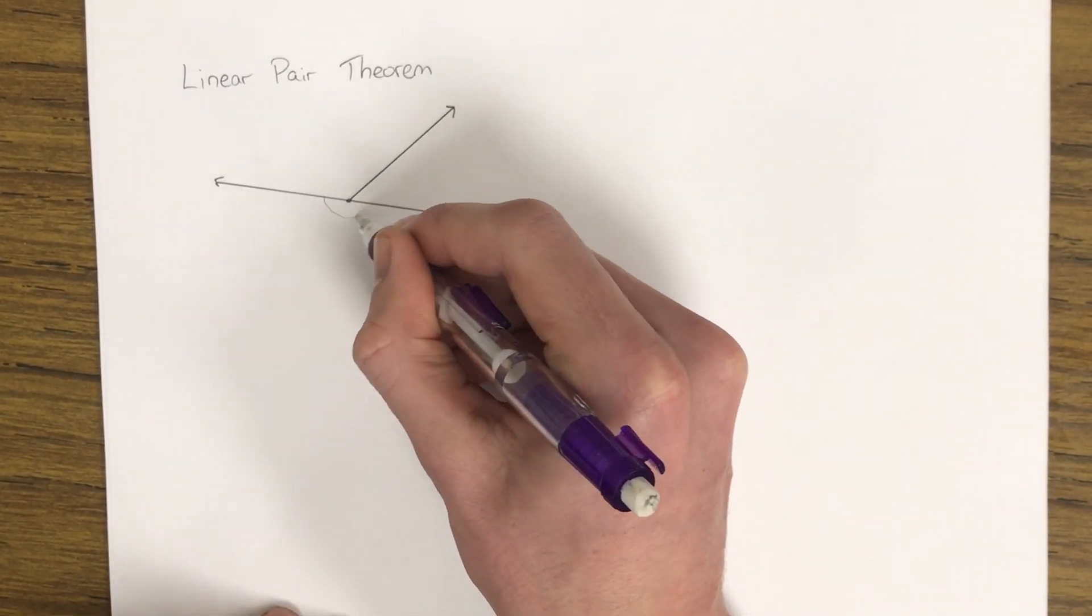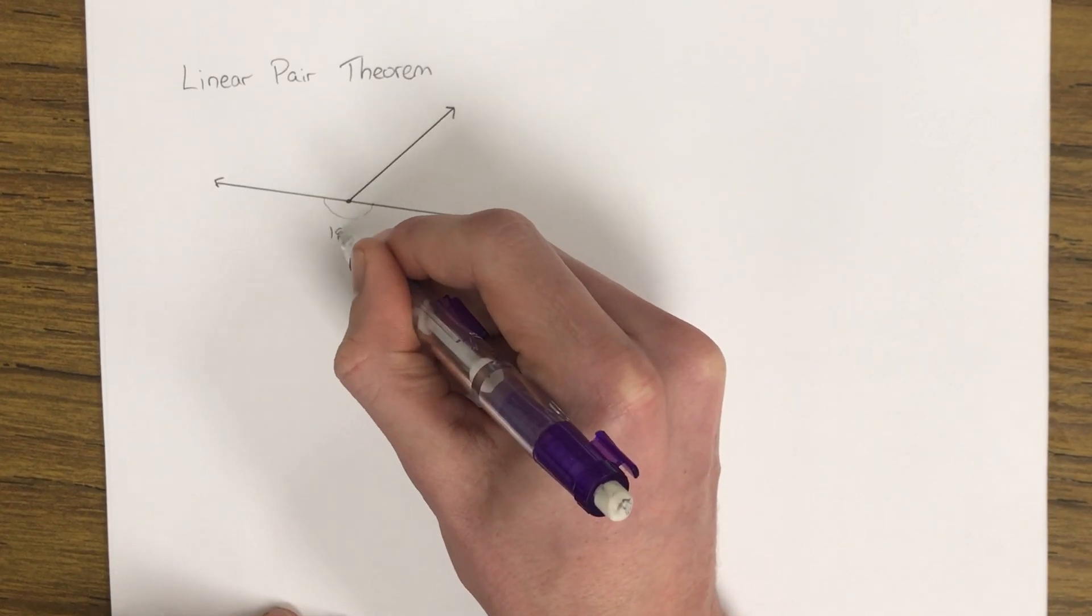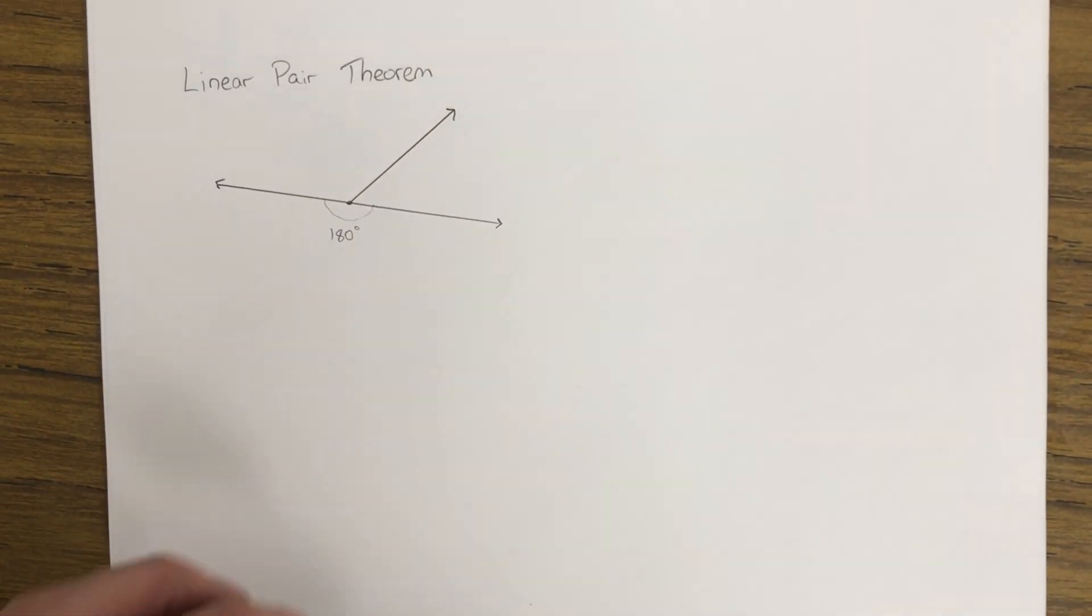So a straight angle, an angle on a straight line, is 180 degrees. That's our definition of a straight angle.